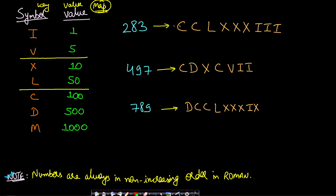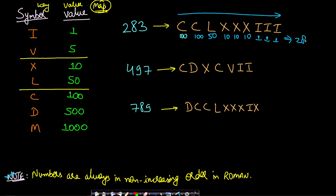You can easily query what is the value of C from this map — go to the key C and get the value 100. For C we write 100, and again for the next C we write 100. Then for L it is 50, for X it is 10, 10, 10, and then 1, 1, 1. If you add all these values you get 283. The values are in non-increasing order — once you see a higher value, you will not see any higher value to the right of it.